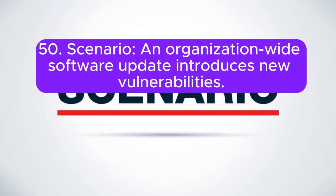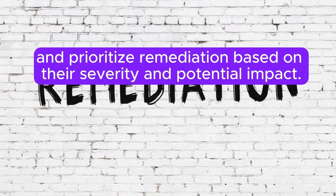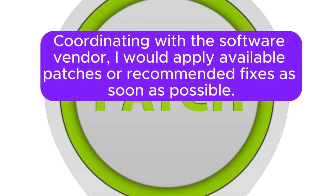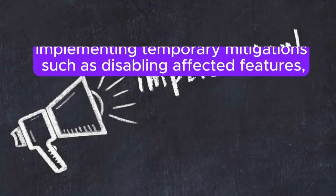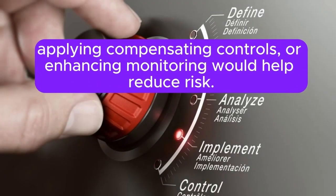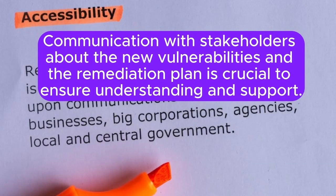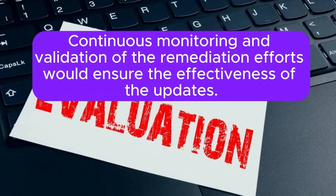Scenario 50: An organization-wide software update introduces new vulnerabilities. How do you manage this situation? I would immediately assess the impact of the new vulnerabilities and prioritize remediation based on their severity and potential impact. Coordinating with the software vendor, I would apply available patches or recommended fixes as soon as possible. Implementing temporary mitigations such as disabling affected features, applying compensating controls, or enhancing monitoring would help reduce risk. Communication with stakeholders about the new vulnerabilities and the remediation plan is crucial to ensure understanding and support. Continuous monitoring and validation of the remediation efforts would ensure the effectiveness of the updates.